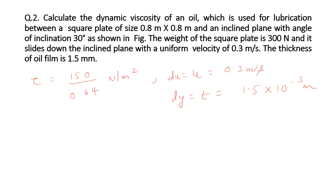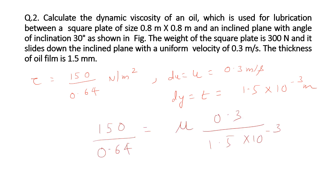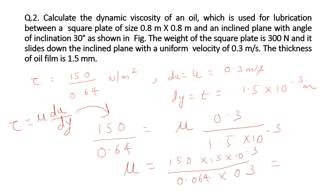We put all values into the general formula. Using the shear stress equation with du and dy values, after solving we get the dynamic viscosity as 1.17 newton second per meter square. Converting to poise, we get 11.7 poise. This is our required answer.